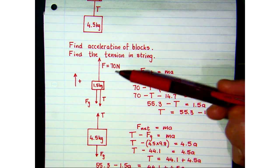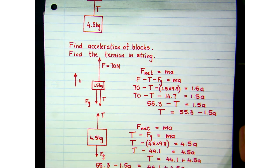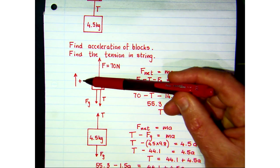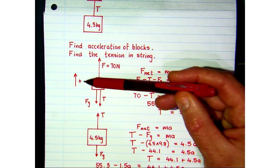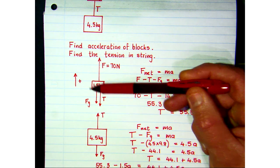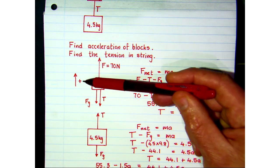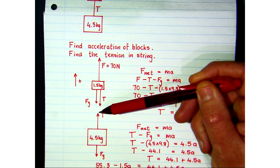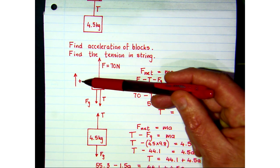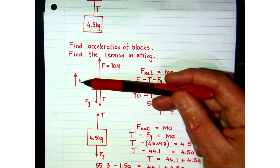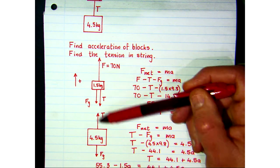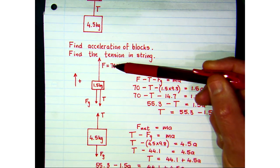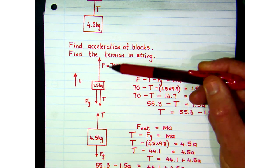Okay, let's isolate each block. Let's make a choice of direction. We want to make upwards positive and that's there's no real reason for that. It might turn out that the system is accelerating downwards and then our answer would come out negative, but we've made a choice of direction up to be positive and that just helps us making a statement for our net force.